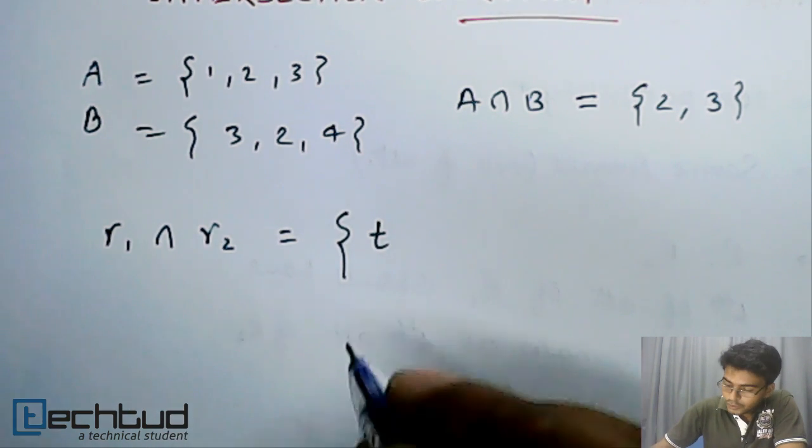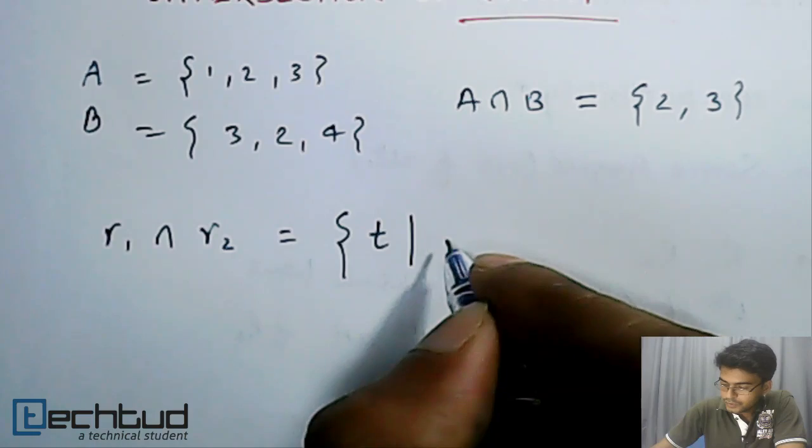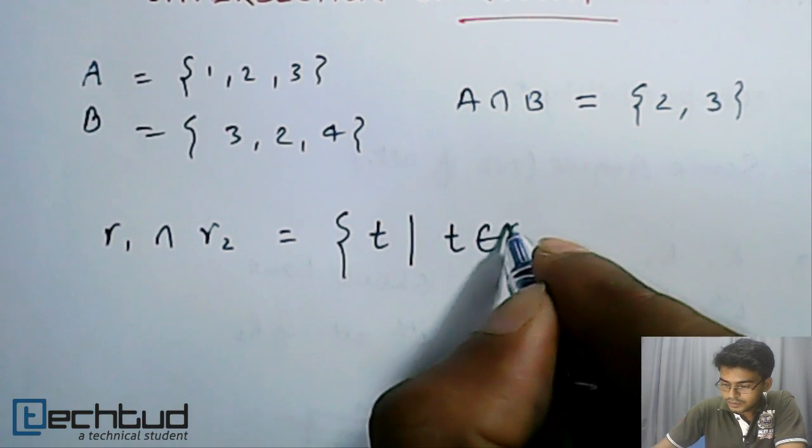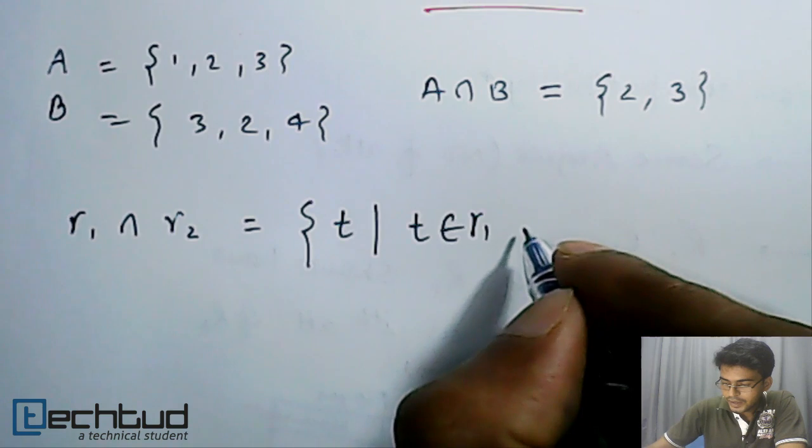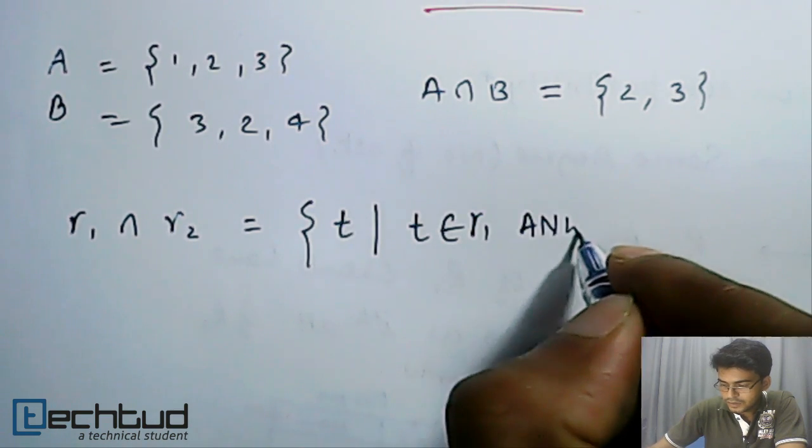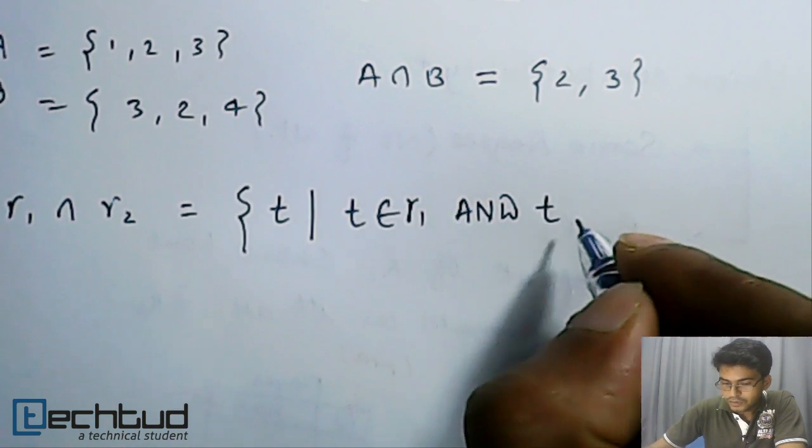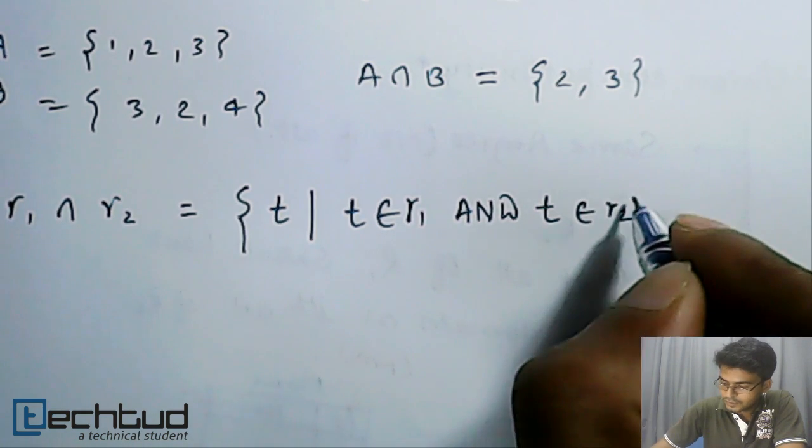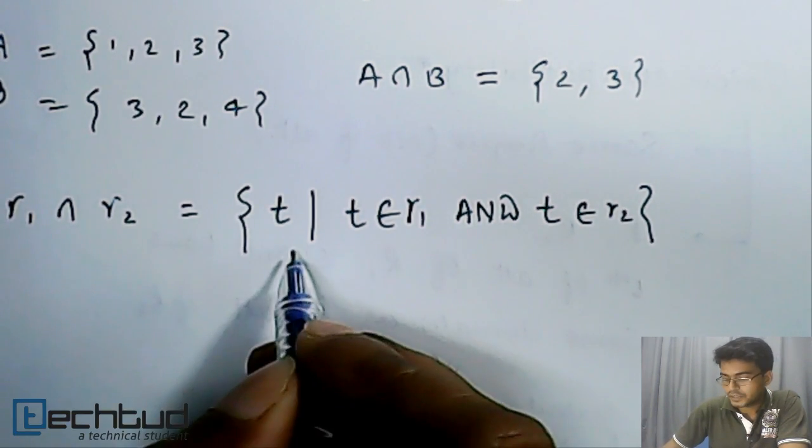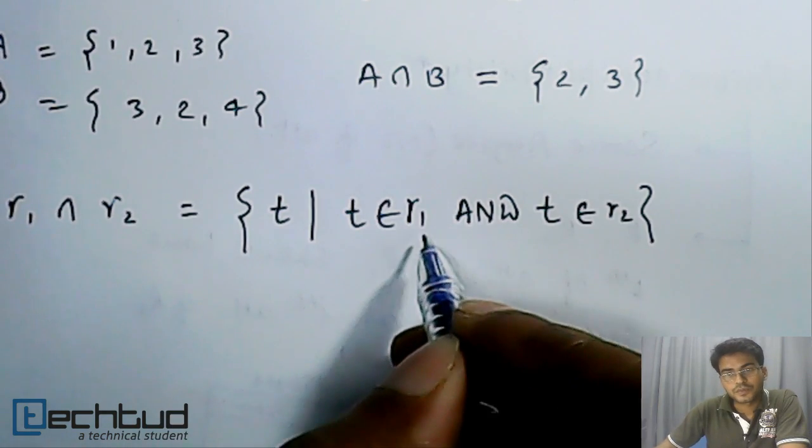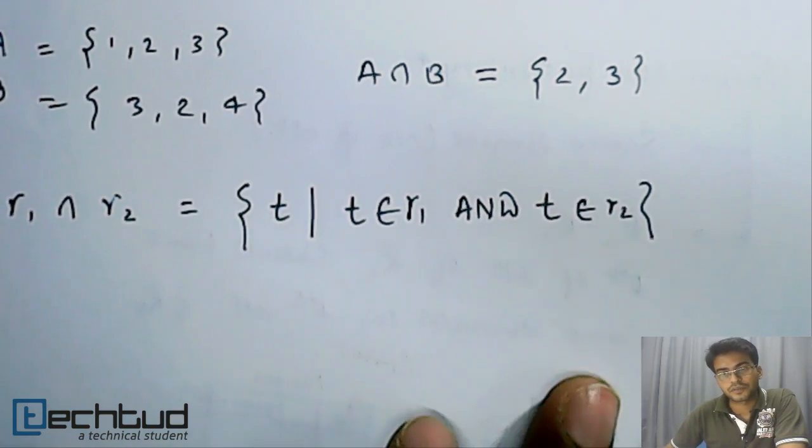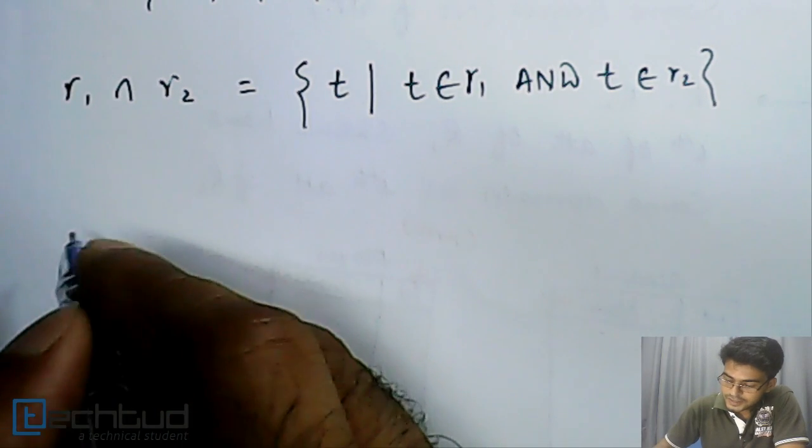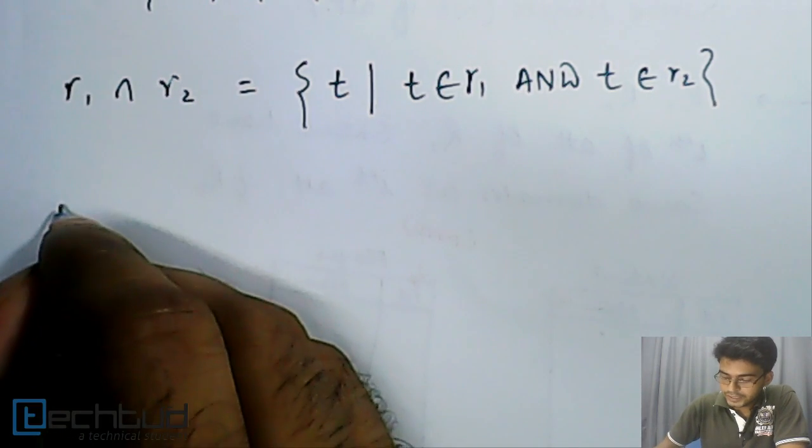...a tuple, but only those tuples which belong to R1 and this T also belongs to R2. That is, the result will be a tuple, and the tuple which belongs to R1 and R2 both. So we can write something like this that if we have an example like this...